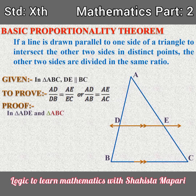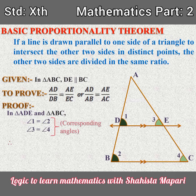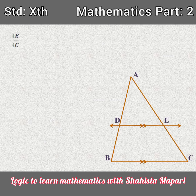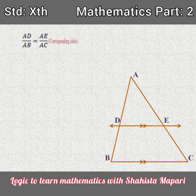In triangle ADE and triangle ABC, angle 1 is equal to angle 2 and angle 3 is equal to angle 4, and they are corresponding angles. Therefore, triangle ADE is similar to triangle ABC by the angle-angle similarity test. After that, we can write AD upon AB is equal to AE upon AC, and they are corresponding sides.